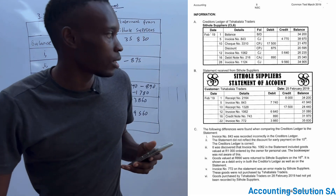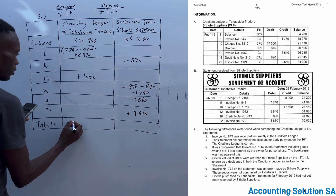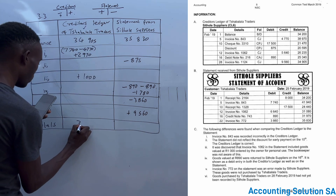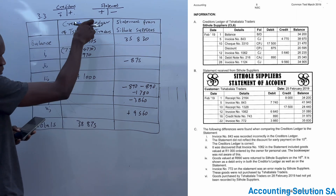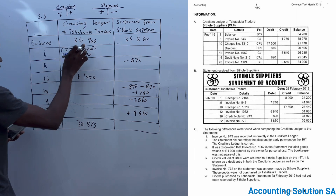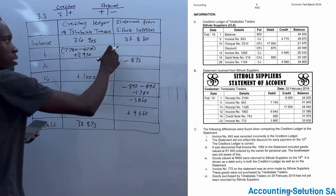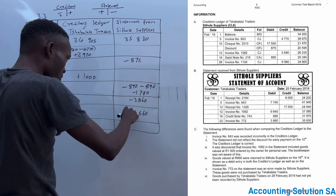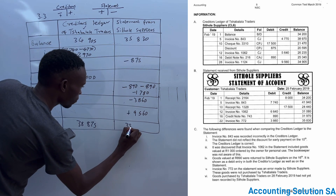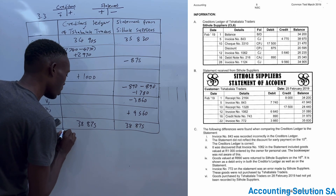After recording all adjustments, we calculate the totals. Add all the amounts on the creditors ledger side — where you have a minus, subtract it. Do the same on the statement side. Both totals come to R38,875. That's how you balance a creditors ledger account reconciliation — very simple and straightforward.